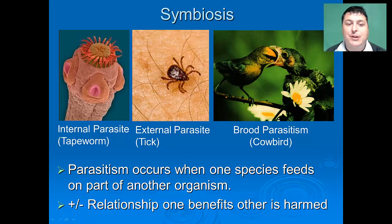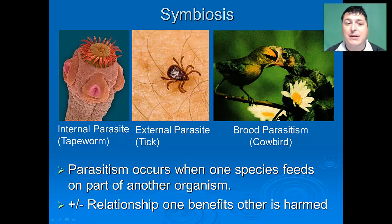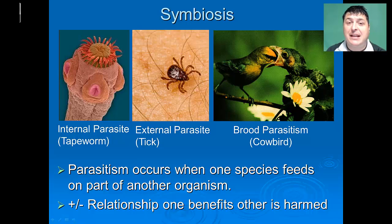A good example of brood parasitism would be a cowbird. Cowbirds lay their eggs in their host's nest, and then the young are brought up by the host parents. What we see here is not one bird eating another — it's a host parent feeding its parasitic baby.